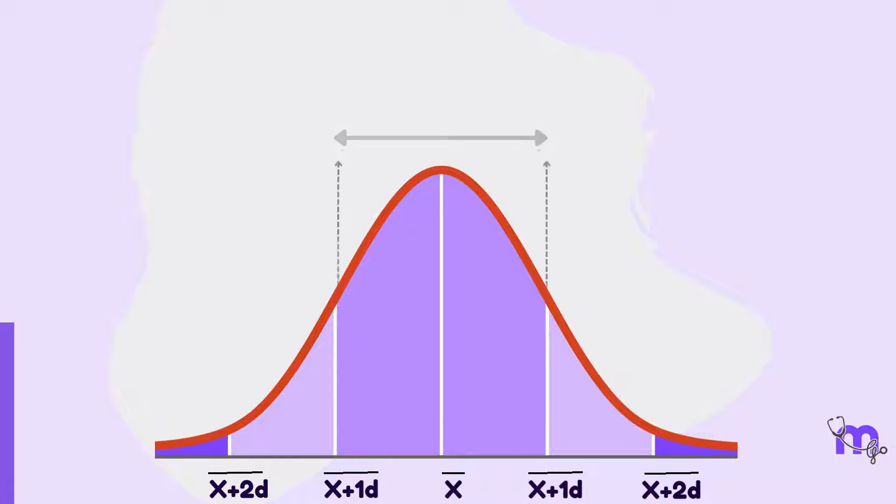The area between one standard deviation on either side of the mean will include approximately 68% of the values collected by the data.